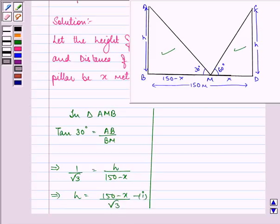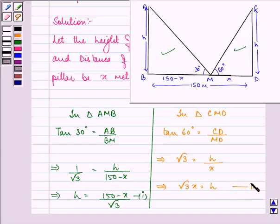In the same direction, in triangle CMT, tan 60 degrees is equal to CD upon MD. That implies root 3 is equal to H upon X. That further implies root 3X is equal to H. Let this be the second equation.